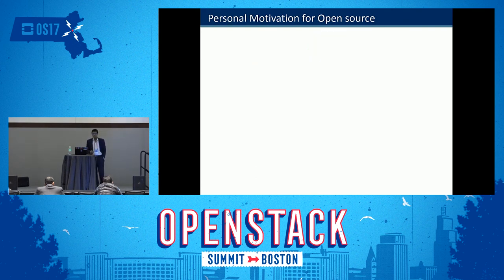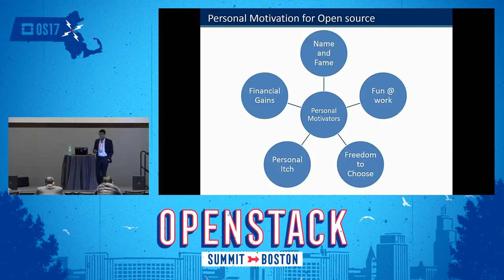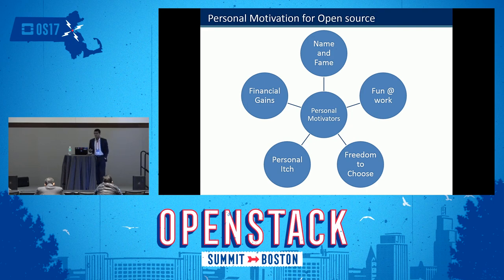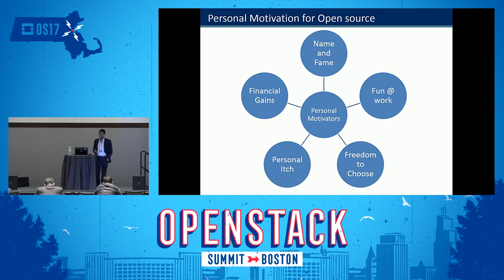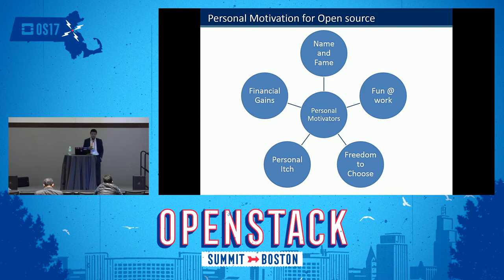Next are individual motivations for open source. The fundamental one is name and fame — many people aspire to gain recognition on the internet. Next is fun at work: open source does not believe in boundaries, so individuals are motivated toward it. Third is freedom to choose — no obligations; you are free to select and free to leave. Fourth is personal reach — working with like-minded people. And of course, financial gains: most open source developers are well paid.